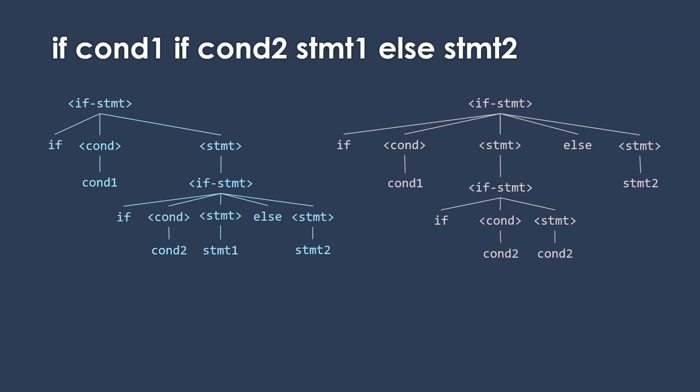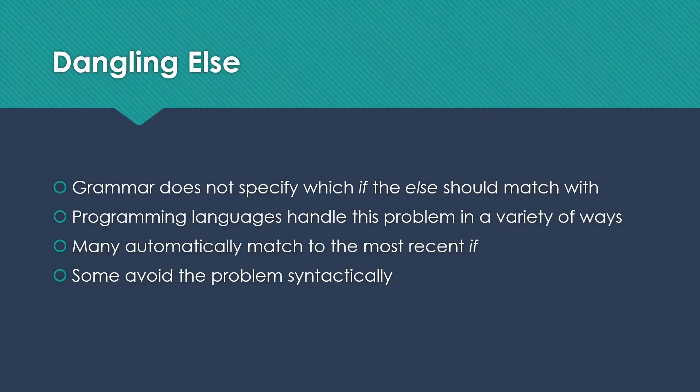If I have if condition one, and then that's going to if condition two, do statement one, else statement two, we could actually interpret that either of two ways. Because the else could attach to the first if, or to the second if. So both of these parse trees would be valid according to our grammar. This is called the dangling else problem.